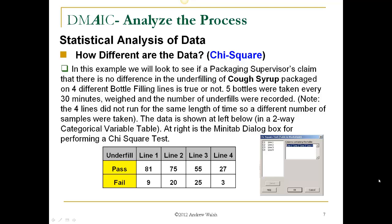In this example, we will look to see if a packaging supervisor's claim — that there is no difference in the under-filling of coffee packaged on four different bottle-filling lines — is true or not. Five bottles were taken every 30 minutes, weighed, and the number of under-fills were recorded. Note the four lines did not run for the same length of time, so a different number of samples were taken. The data is shown in a two-way categorical variable table, and at right is the Minitab dialog box for performing a Chi-Square test. We will select the data for all four lines and put them into the Chi-Square test.